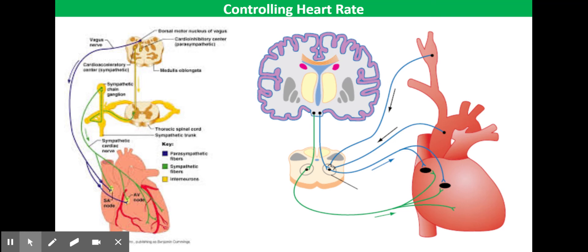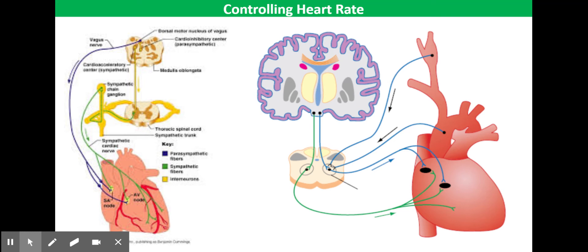Now there's sort of two ways that this can happen. Action potentials sent down a sympathetic nerve can cause the release of the neurotransmitter noradrenaline. When noradrenaline is released, that's going to increase the heart rate. In comparison, action potentials sent down the vagus nerve can release the neurotransmitter acetylcholine, which is going to be responsible for reducing heart rate. So two different hormones there having two different effects.